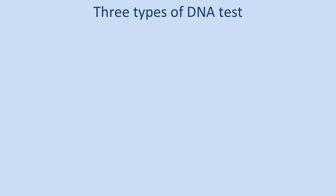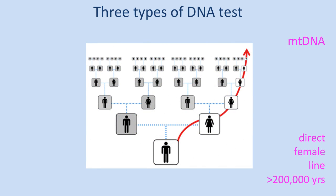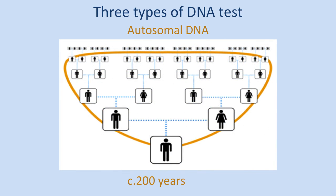We have three different types of tests. The first is the Y-chromosome DNA test — only males have a Y chromosome, so only males can take this test, and it follows the all-male surname line. The second is the mitochondrial DNA test, which tells you about your all-female line — both males and females can take this test, but it only tells you about that one specific female line. The third is the autosomal DNA test, which gives you matches with genetic cousins on all your different ancestral lines, best used for the last five or six generations.